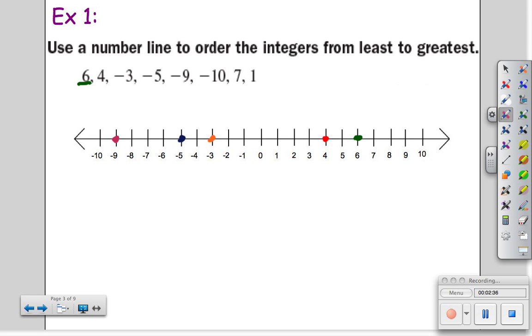Negative 9 will be to the left of zero, as will negative 10. Positive 7 is back on the right side of zero, as is positive 1.